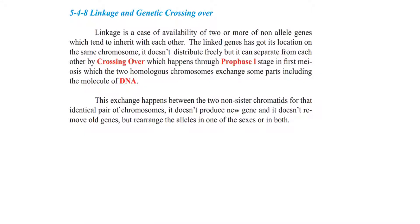Linkage and genetic crossing over. Linkage is a case of availability of two or more non-allele genes. Allele genes are located on two separate chromosomes, but linkage is about genes located on the same chromosome — the availability of two or more non-allele genes which tend to inherit together. For example, in a pea plant, the color of the flower and the length of the plant are located on the same chromosome. Because these two traits are located on the same chromosome, they are linked genes, so any gamete that receives this chromosome receives both traits together, which inherit with each other.